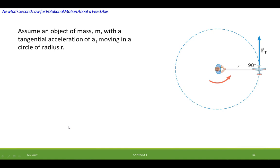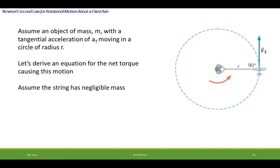Assume an object of mass m with a tangential acceleration a_t going off on a tangent is moving in a circle of radius r. Let's derive an equation for the net torque causing this motion and we assume the string has negligible mass. So we're only talking about a point mass out some distance.